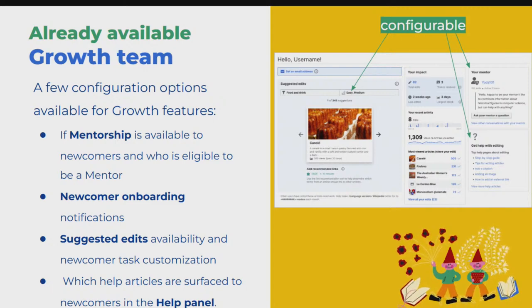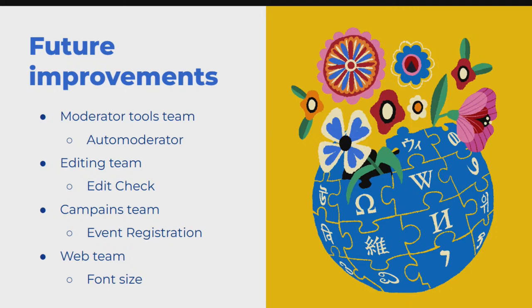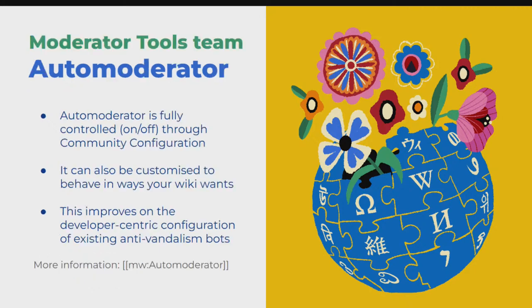We have a set of future improvements we'd like to add to community configuration — ideas submitted by different product teams at Wikimedia Foundation. As Martin said, any team can take community configuration and add their own product to it. We'll cover four sets of features from four different teams. First is Auto Moderator. I'm Sam from the Moderator Tools team. My team is building software called Auto Moderator — essentially an anti-vandalism bot that uses a machine learning model to identify and revert bad edits on Wikipedia.